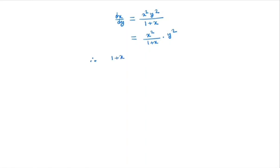So we can write it as 1 plus x divided by x squared dx is nothing but y squared dy. So this is a separable ODE. So in this case we will integrate both sides.